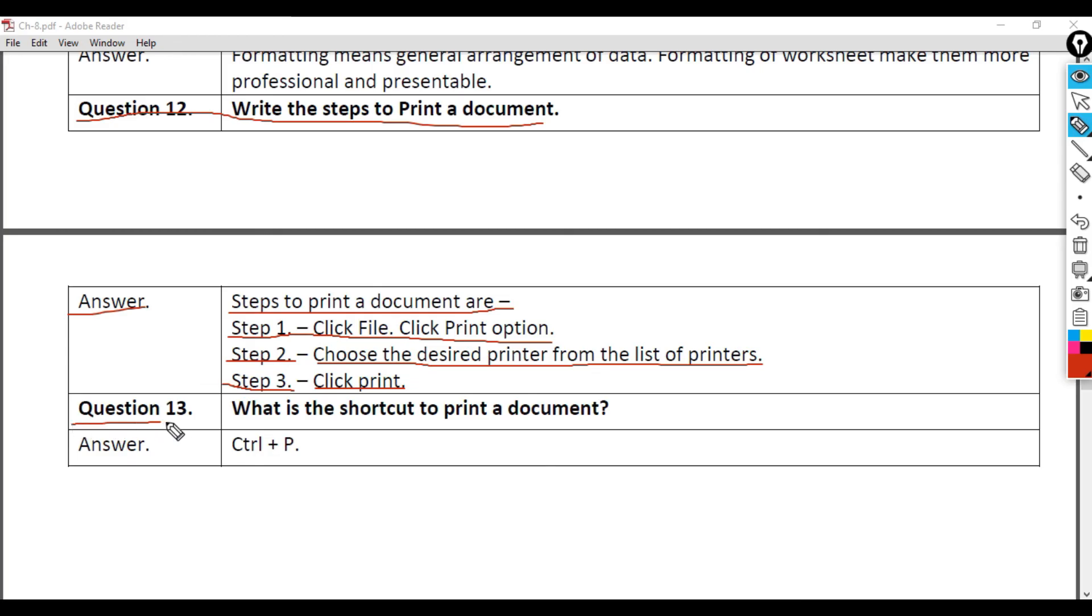Question 13: What is the shortcut to print a document? Answer: Ctrl + P.